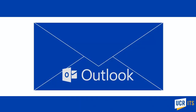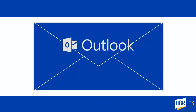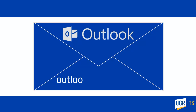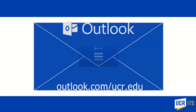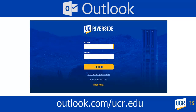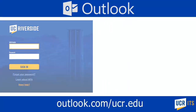To access your email in a browser, enter the address outlook.com/ucr.edu. If you do not have an active login, you will be taken to the central authentication service screen. You should enter your UCR NetID and password as you normally would to sign in.